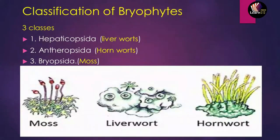Now let us look at the classification of Bryophytes. Bryophytes have been classified into three categories or classes: the first is Liverworts, the second is Hornworts, and the third is Mosses. Liverworts are also called Hepaticopsida, Hornworts are called Anthocerotopsida, and Mosses are called Bryopsida.